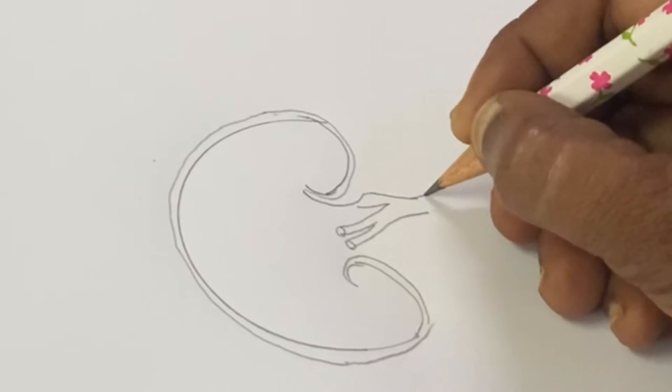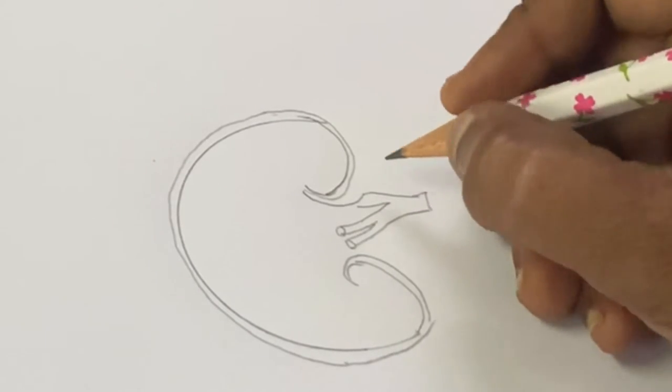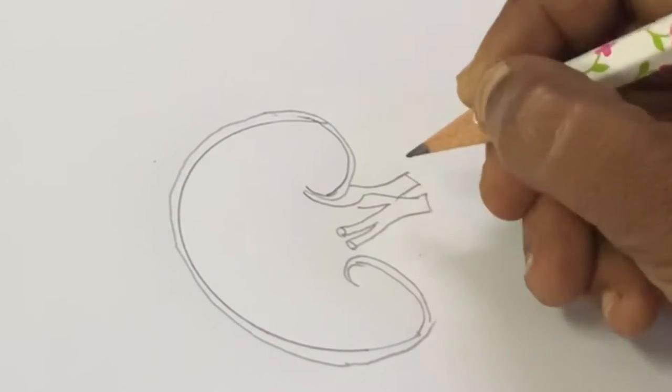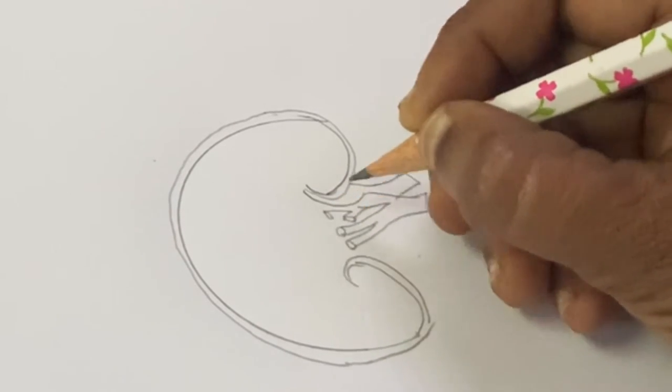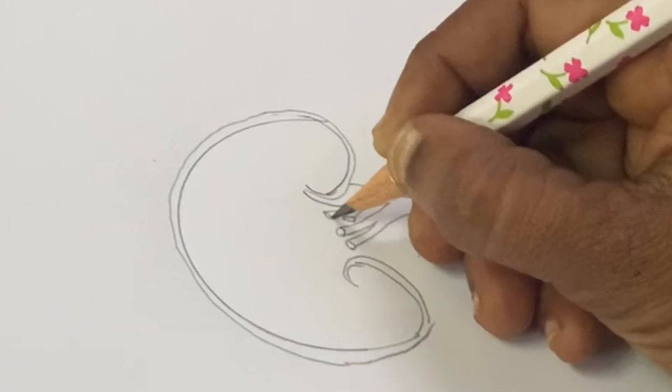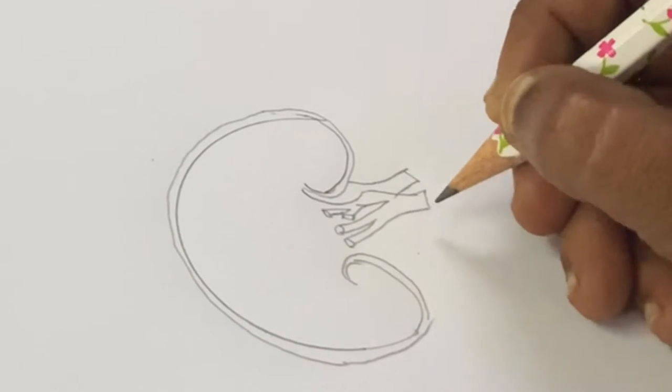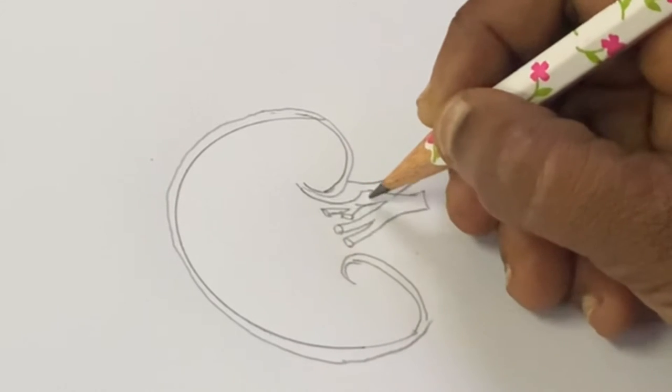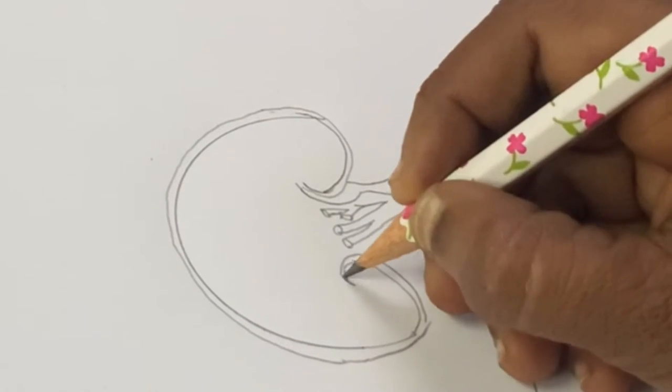So this is the renal vein. Next we have to draw the renal artery. This is the renal artery. Then from here the ureter comes from this region, so we have to draw from here.